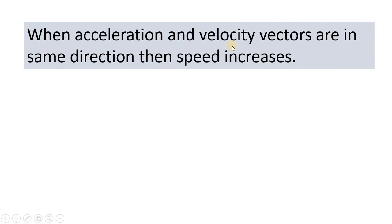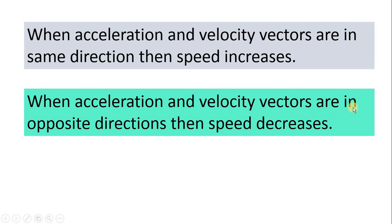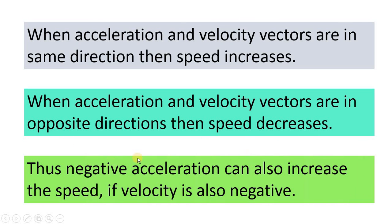So, when acceleration and velocity vectors are in the same direction — same sign, plus-plus or minus-minus — the speed will increase. And when the acceleration and velocity vectors are in opposite directions — one positive, the other negative — then speed decreases. Thus, negative acceleration can also increase the speed if velocity is also negative. Therefore, we must conclude that negative acceleration does not always mean a reduction in speed; sometimes it can also cause an increase in speed.